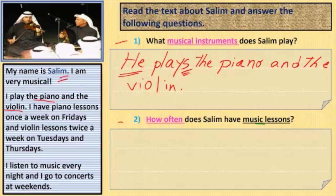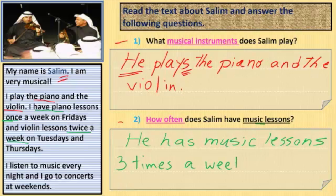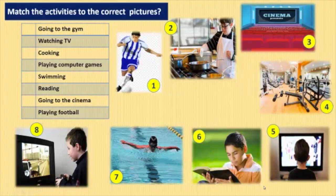Now let's look at our second question: How often does Selim have music lessons? In the text: I have piano lessons once a week on Fridays, and violin lessons twice a week on Tuesdays and Thursdays. So the answer is: he has music lessons once a week for piano and twice a week for violin.